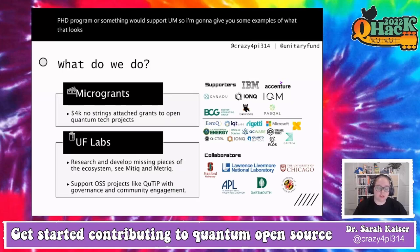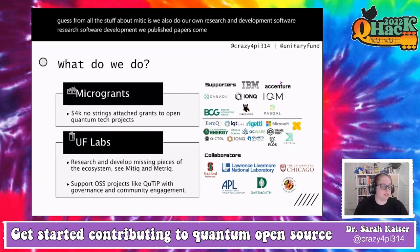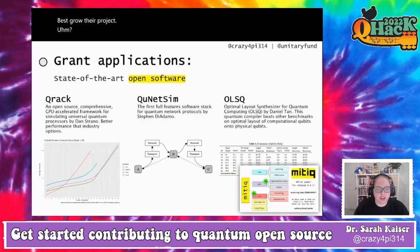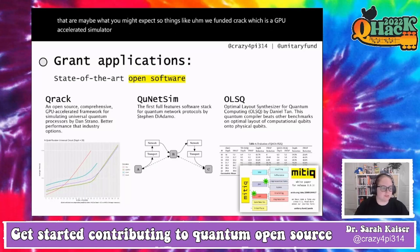How Unitary Fund does this is through microgrants — $4,000, no strings attached — to people who submit applications. We review on a rolling basis with no deadlines, and we like to fund projects that wouldn't have support elsewhere or are a little more risky than what a company or PhD program would typically fund. We also do our own research and software development, publish papers, and work with existing open source projects to help support them.